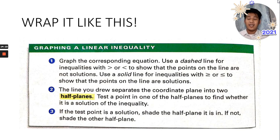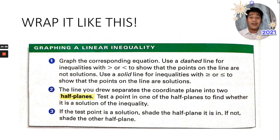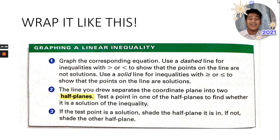To wrap up, graphing a linear inequality involves three conclusions. First, graph the corresponding equation using a dashed line for strict inequalities (greater than or less than) to show points on the line are not solutions, or a solid line for inequalities with greater than or equal to or less than or equal to to show points on the line are solutions. Second, the line separates the coordinate plane into two half planes — test a point in one to find whether it is a solution. Third, if the test point is a solution, shade the half plane it is in; if not, shade the other half plane.